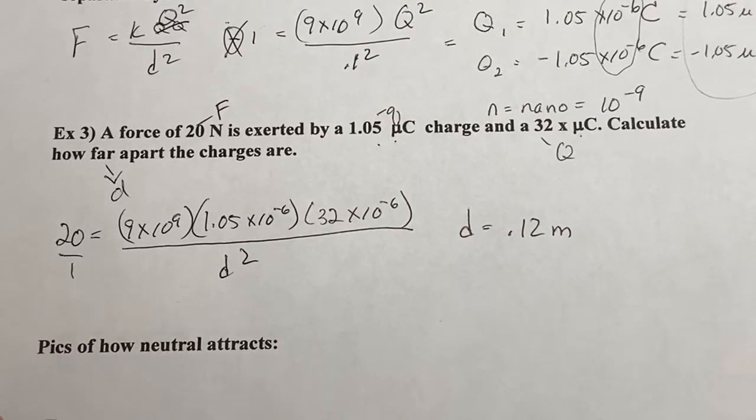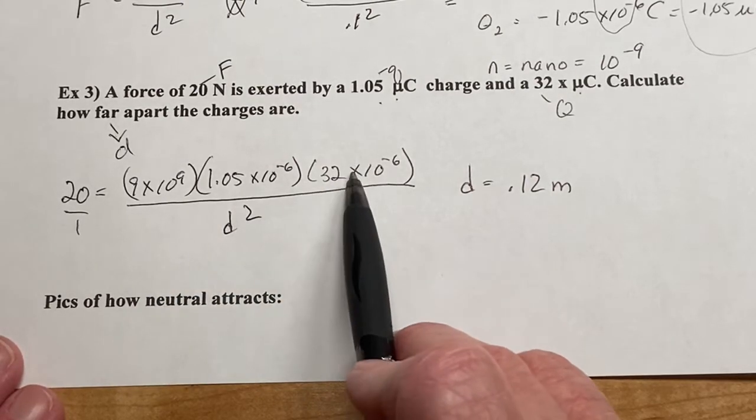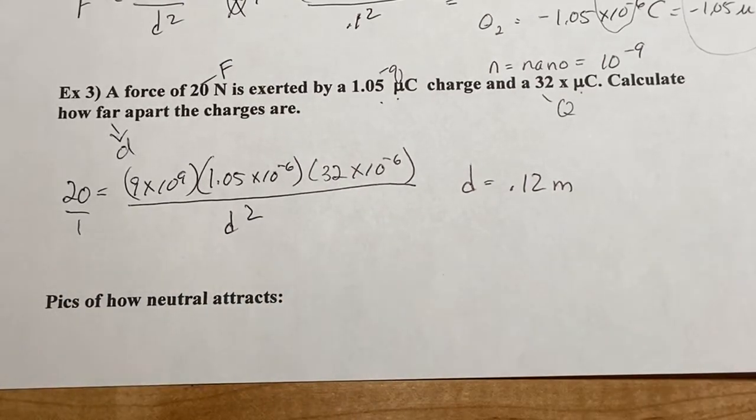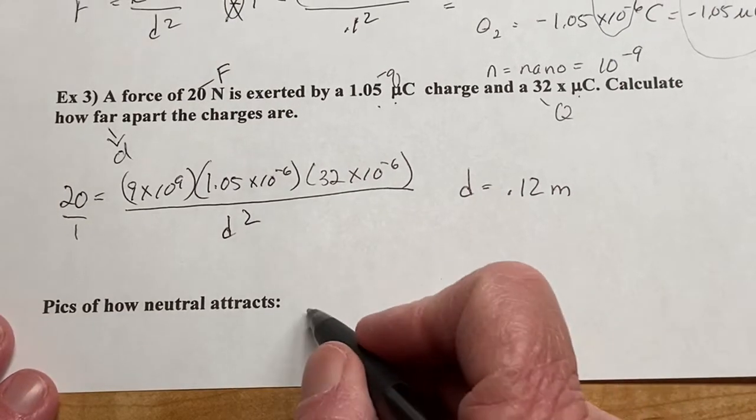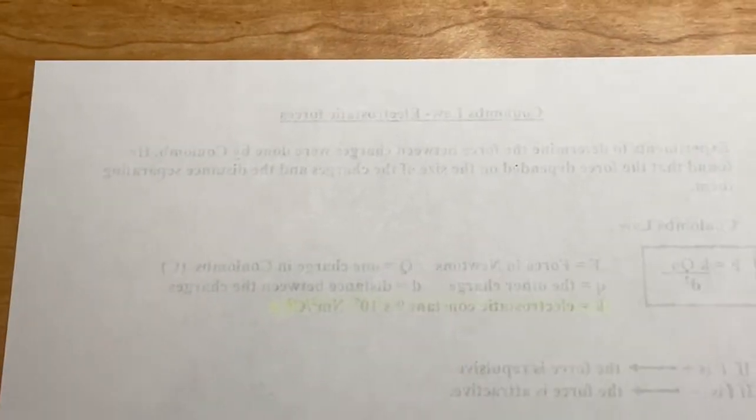Alright. So the last thing that we're going to talk about is a little problem with Coulomb's law because we know that neutrals will attract. But neutral, if you were to put this in a formula with a charge of zero, you would get zero force when in reality it does exist. It's just not something we can calculate. So we're going to turn this over. Raise the back of the paper. Zoom back out a little bit. And we're going to draw a little bit.